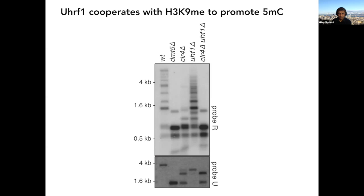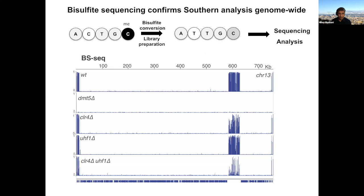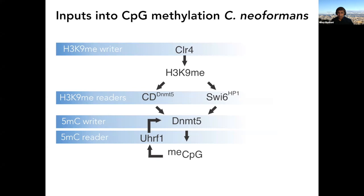Bisulfite sequencing confirms these results: DNMT5 knockout loses all methylation; CLRC4 knockout loses some; UHRF1 knockout shows barely a phenotype; the CLRC4/UHRF1 double is stronger but not completely gone. This leads to the basic model: H3K9 methylation is upstream of DNA methylation, read by two readers (chromodomain of DNMT5 and HP1), and promoted by UHRF1.